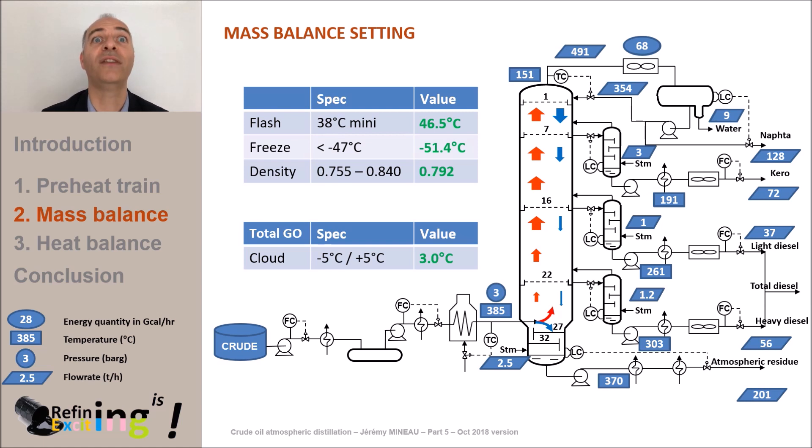Also, note that the flash point and the freezing point properties of kerosene, as well as the diesel cloud point, depend on the nature of the crude, whether it is paraffinic or naphthenic. Finally, note that a distillation column is usually equipped with flash point, freezing point, and cloud point analyzers that display the values on a real-time basis.